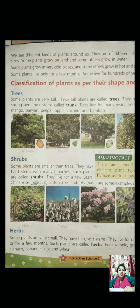Now the first type is trees. We all know about trees — there are so many trees in the woods. The trees are types of plants which can live for hundreds of years. We see different kinds of plants around us. They are of different types, shapes and sizes. Some plants grow on land and some grow in water.